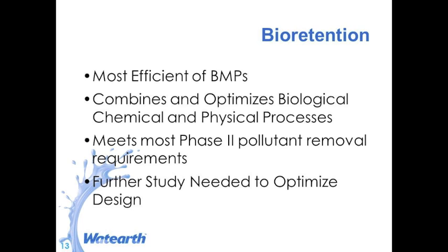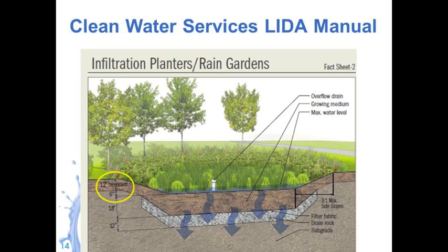The design that needs to be optimized is really the growing media, and we're seeing a lot of research on different types of growing media that may include other elements to target specific pollutants. Generally, bioretention will have a storage area at the upper end where ponding occurs, plantings whose density varies by climate, the growing media which is typically at least 18 inches, and then a drain rock layer — especially if there's an underdrain due to Type C or Type D low infiltration, low saturated hydraulic conductivity soils.